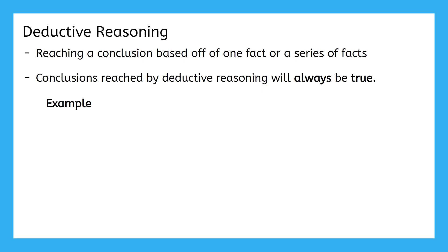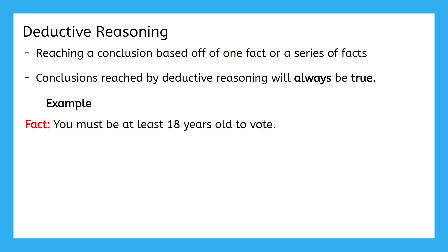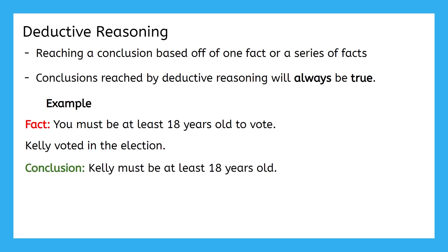Let's take a look at an example. We'll start with: you must be at least 18 years old to vote. This is a fact — it's definitely not an opinion or an observation, and it is something that will always be true no matter what day we make this statement. Then we have: Kelly voted in the election. What conclusion do you think we can make about Kelly based on this information? Kelly must be at least 18 years old.